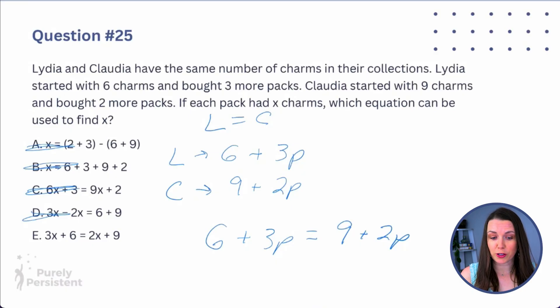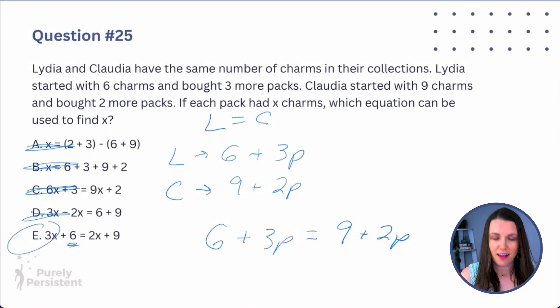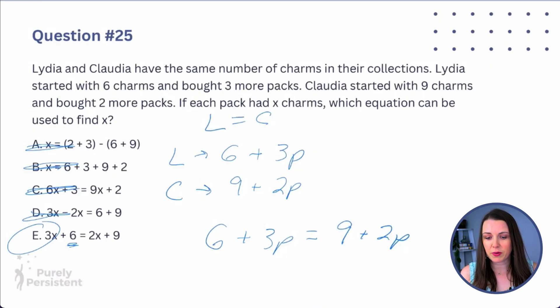Even though E has the 6 second instead of first, it doesn't matter when you're adding — it's like saying apples and oranges versus oranges and apples. So 3P + 6 = 2P + 9 matches Lydia = Claudia. The answer is E. We could actually solve for X to find how many charms are in each pack.